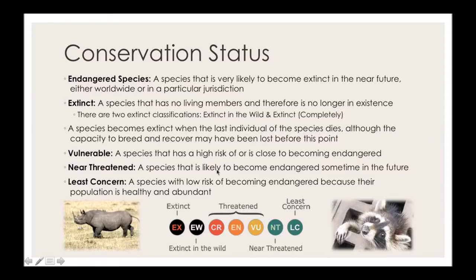There are a few other conservation ranks. Vulnerable is a species at high risk of becoming endangered. Near threatened is a species likely to become endangered sometime in the future but not yet there. Least concern means the species has a low risk of becoming endangered, with usually a healthy and abundant population. For example, black rhinoceros are critically endangered, while raccoons, which we see often here in Illinois, fall under least concern with very healthy and widespread populations.